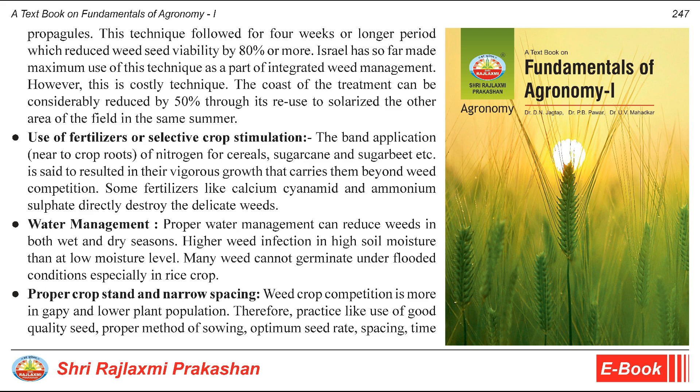Use of fertilizers or selective crop stimulation: banded application near crop roots of nitrogen for cereals, sugarcane, and sugar beet results in their vigorous growth, carrying them beyond weed competition. Some fertilizers like calcium cyanamide and ammonium sulfate directly destroy delicate weeds. Water management: proper water management can reduce weeds in both wet and dry seasons. Higher weed infection occurs at high soil moisture. Many weeds cannot germinate under flooded conditions, especially in rice crops.